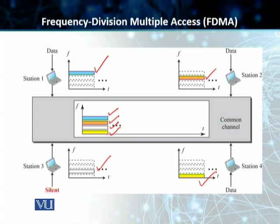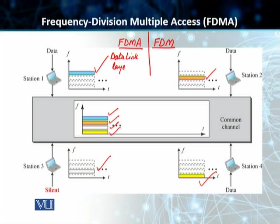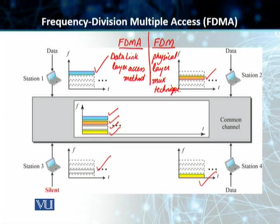Before we leave the discussion of FDMA, I want to clarify one additional point: FDMA and FDM are two different techniques. FDMA is a data link layer access method, whereas FDM — Frequency Division Multiplexing — is a physical layer multiplexing technique. Although the names are similar, we need to make sure we understand that they are different.